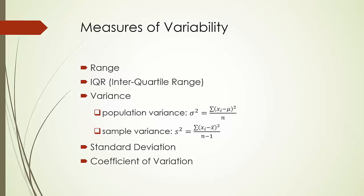One weakness of standard deviation is that it measures absolute variation. Suppose there are two companies A and B. Both companies have a standard deviation of one million dollars in annual profit. Can we say both companies have the same variability or are equally stable in profitability? Now let's say company A averaged 10 million dollars in profit annually and company B's average annual profit is 100 million dollars. We can tell immediately that company A's business is much more risky than company B. To quantify that, we introduce the concept of coefficient of variation, defined as the ratio of standard deviation over mean. Coefficient of variation thus provides a relative measure of variability.